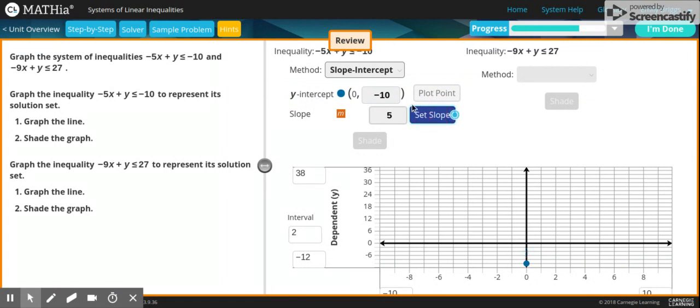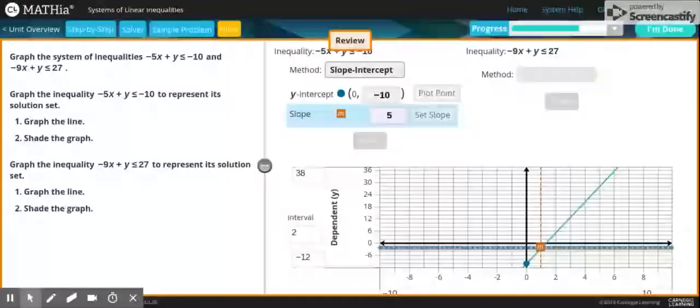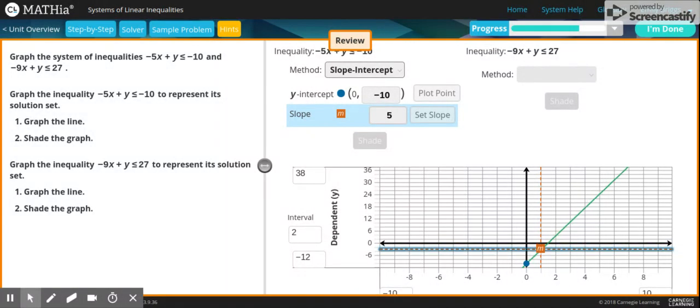Then you set your slope because it is a positive. That means it's going up, not down. Whenever it intersects on the 5th point, which is like right about here.